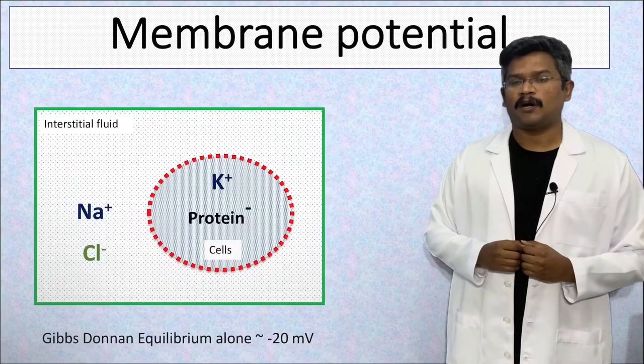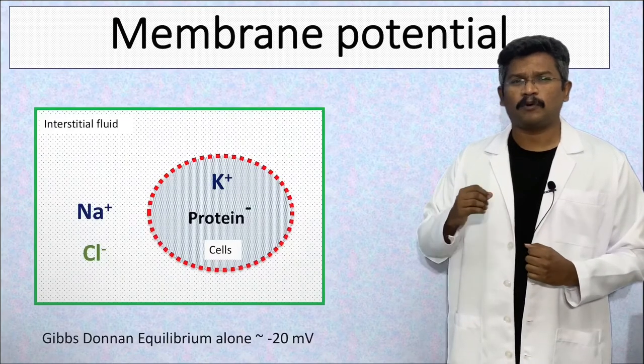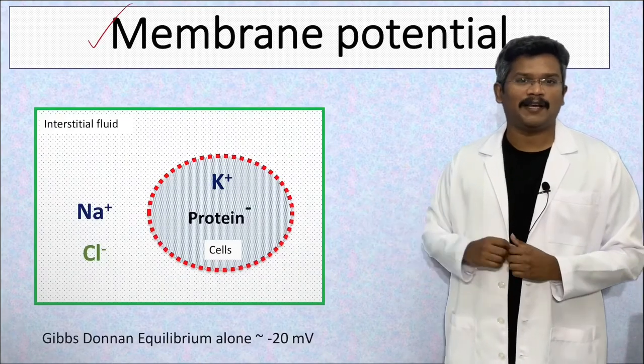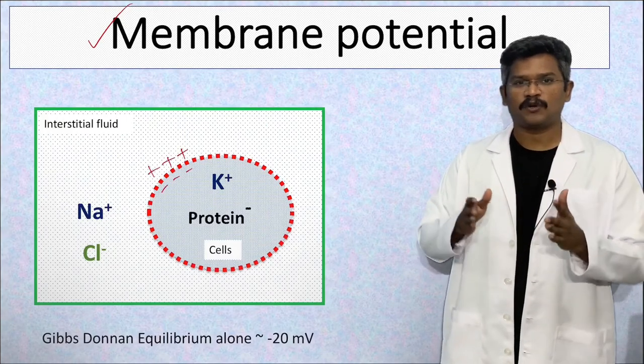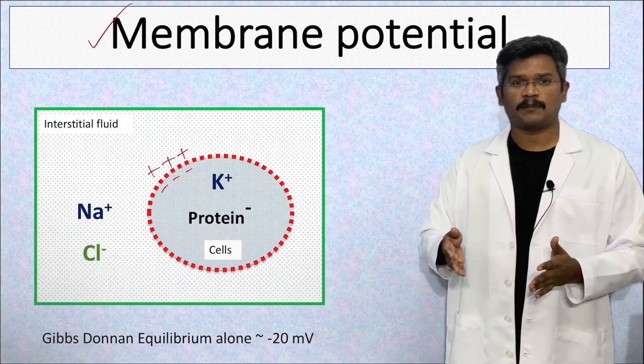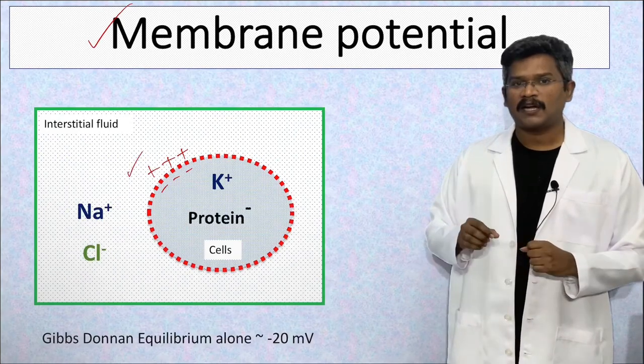Gibbs-Donnan equilibrium also causes development of potential difference across a lipid bilayer. The lipid bilayer acts as a capacitor which stores charges which is responsible for this potential difference.